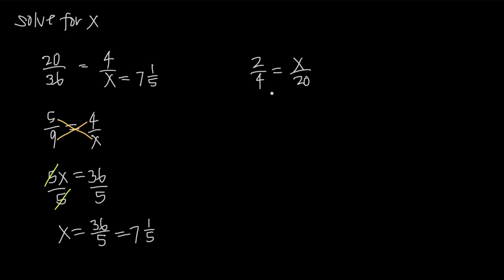Let's look at another example. We have 2 over 4 equals x over 20. Again, we want to see if we can reduce either fraction, and in fact we can reduce the fraction on the left. We divide the numerator and denominator by 2, and 2 fourths reduces to 1 half. So we get 1 half equals x over 20.